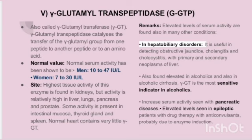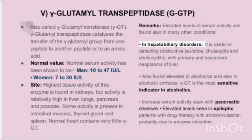Gamma glutamyl transpeptidase (GGTP), also called gamma glutamyl transferase, catalyzes the transfer of the gamma glutamyl group from one peptide to another or to an amino acid. The normal value is 10 to 47 IU per liter in men and 7 to 30 IU per liter in women. The highest tissue activity is found in the kidneys, but activity is relatively high in the liver, lungs, pancreas, and prostate, with some activity in intestinal mucosa, thyroid gland, and spleen. Normal heart contains very little.